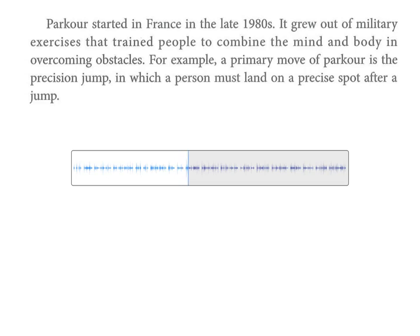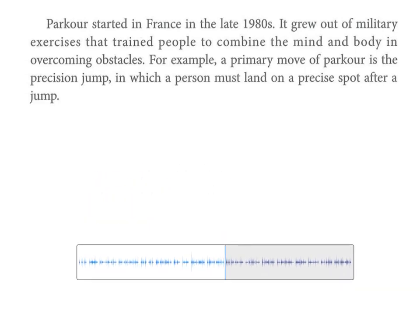绝对不要backward，backward这个单词的意思就是往后。这是第二段。第三段听力：parkour started in France in the late 1980s, it grew out of military exercises that train people to combine the mind and body in overcoming obstacles. A primary move of parkour is the precision jump, in which a person must land on a precise spot after a jump.